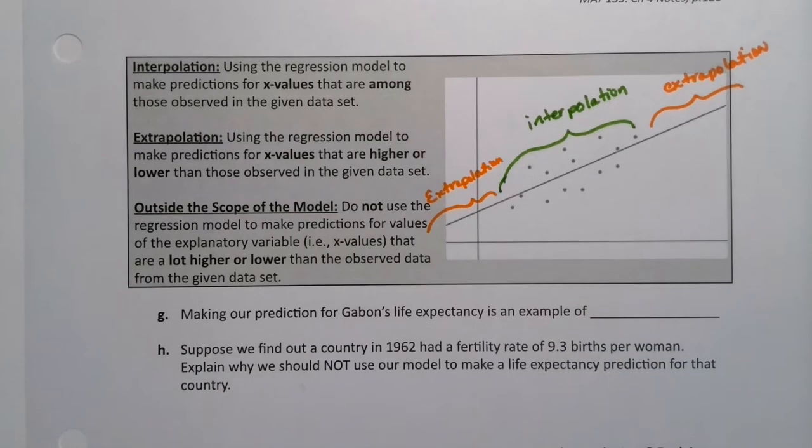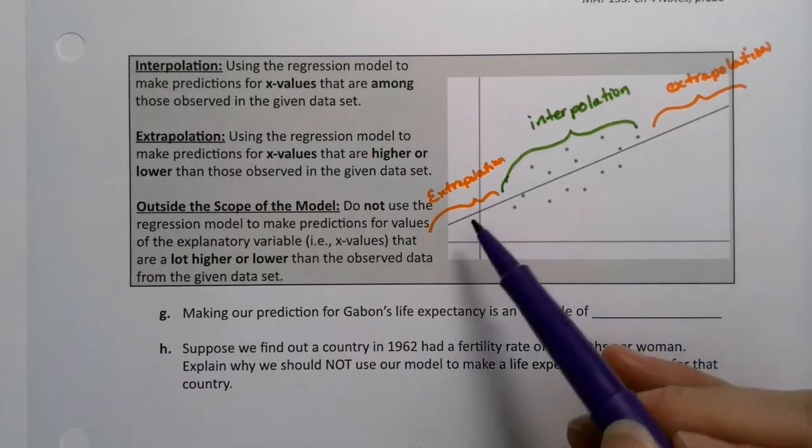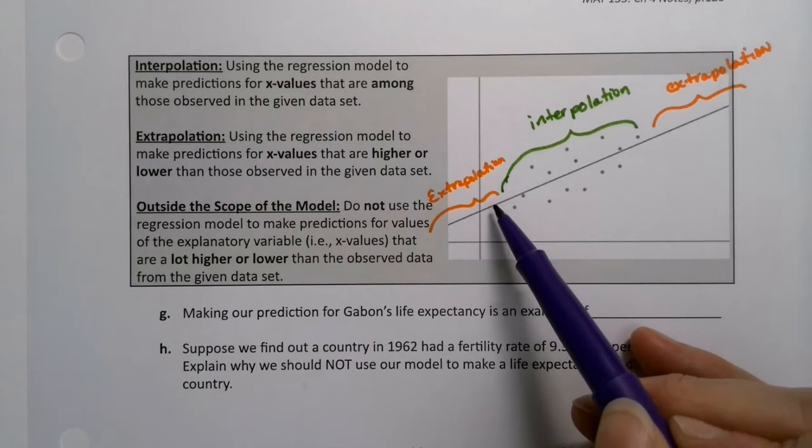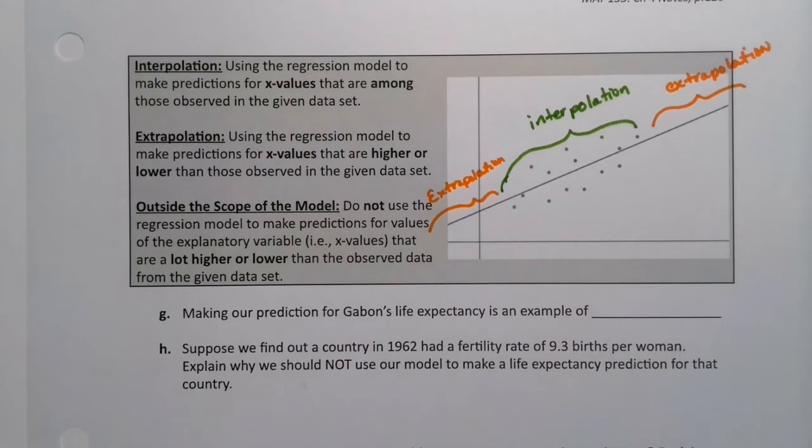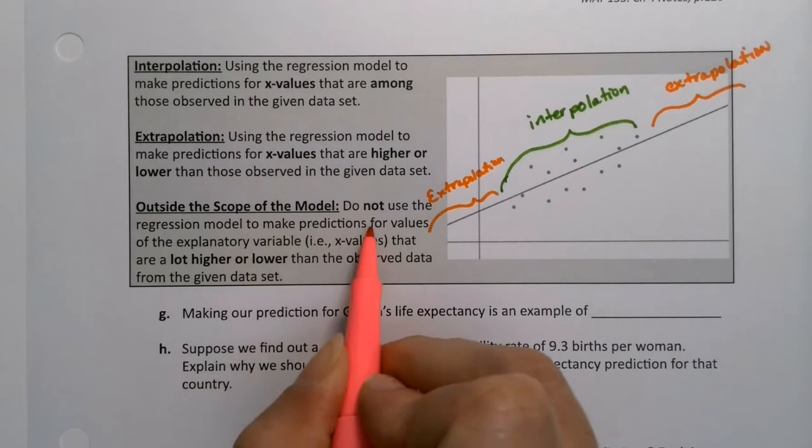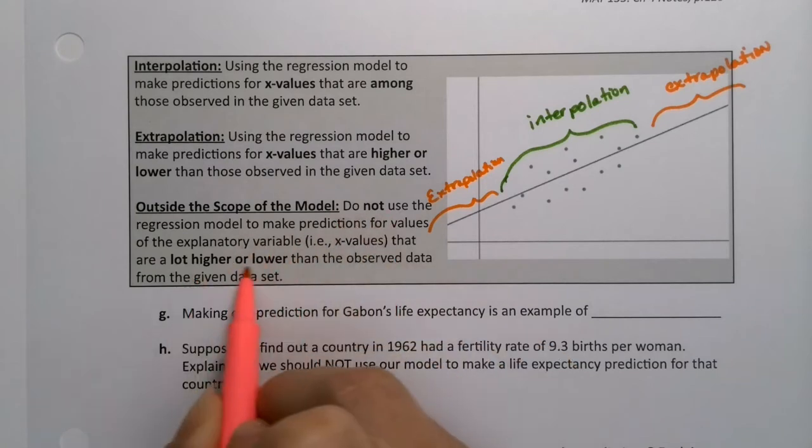Being inside the scope of the model means you're among the data points you have. Being outside the scope of the model means that you're extrapolating. You can extrapolate a little bit, and that's okay. But you want to be careful to not go too far outside the scope of the model.